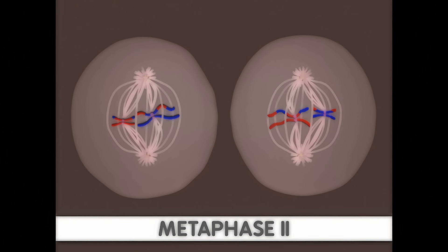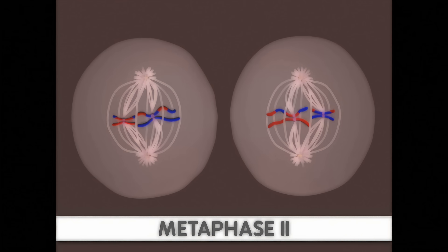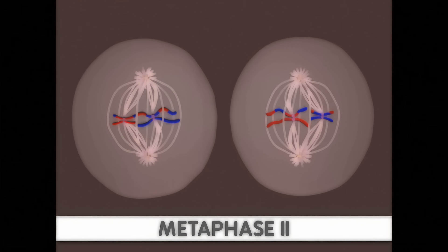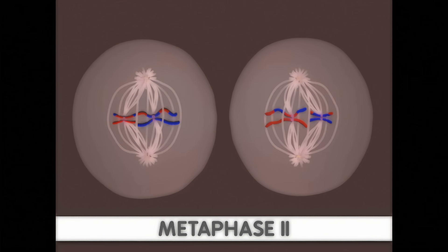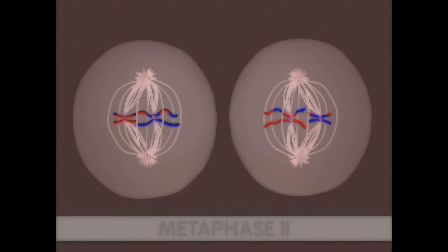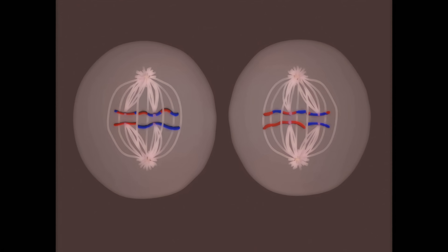In metaphase II, the chromosomes align at the equator of the cell. Again, the alignment is random. Since the sister chromatids are no longer identical, there will be many different possible ways for these chromosomes to align.